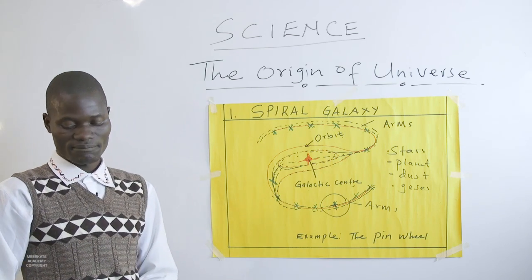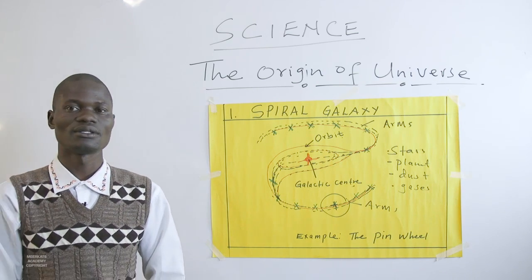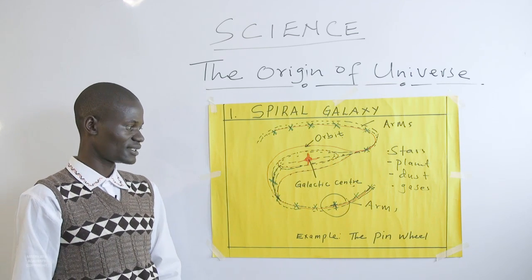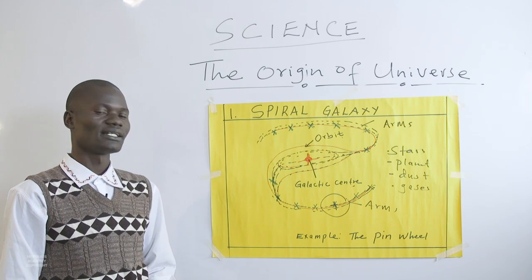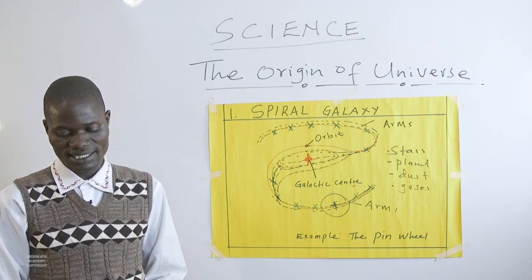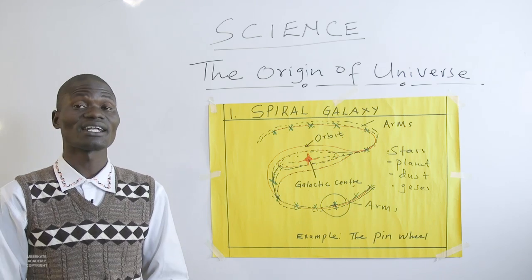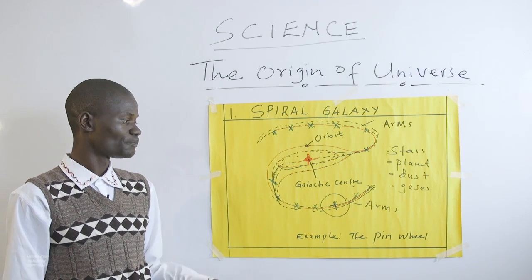Now let us move on and look at the other type of galaxy. Let's go and look at the irregular galaxy.